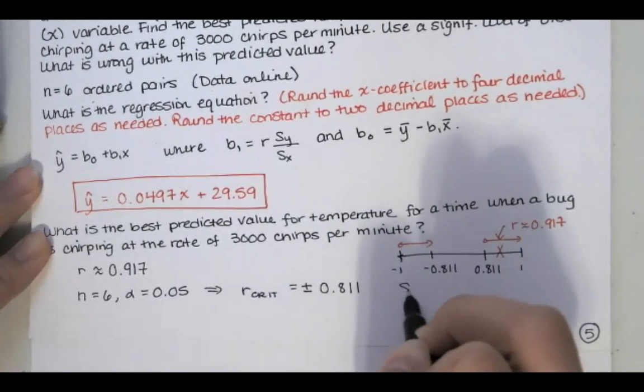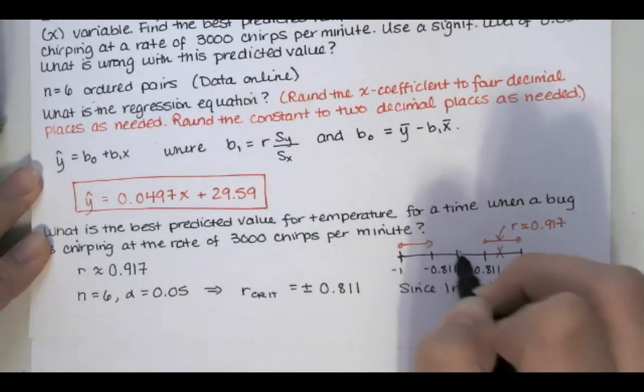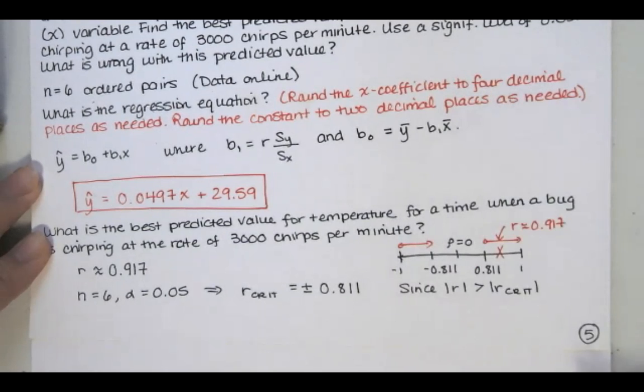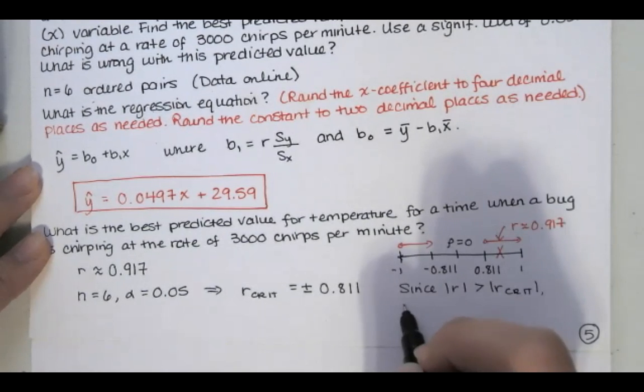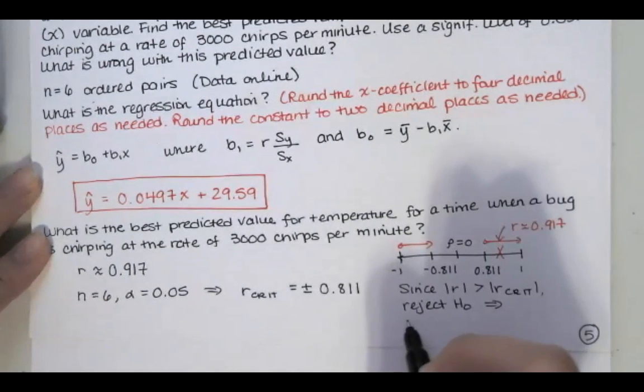So we'll say since the absolute value of r is greater than the absolute value of r critical, because remember rho equals 0 is in the middle there, we reject the null, which in this case means we have sufficient evidence of a correlation.